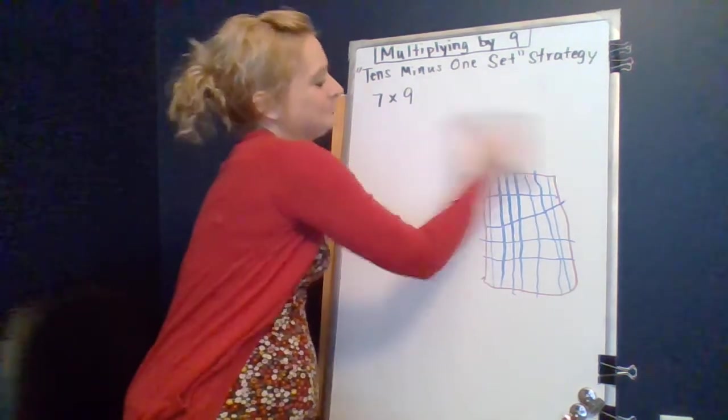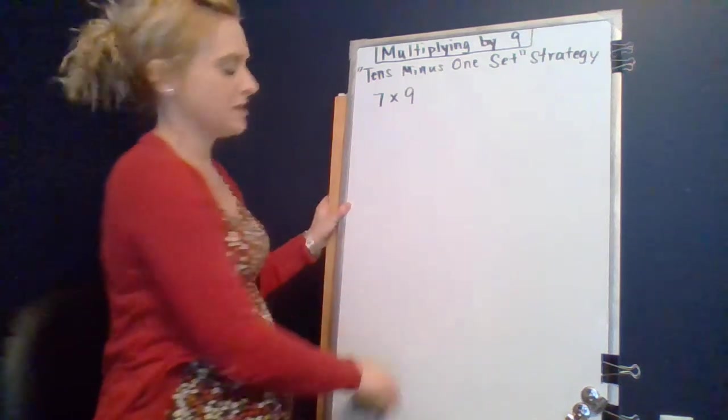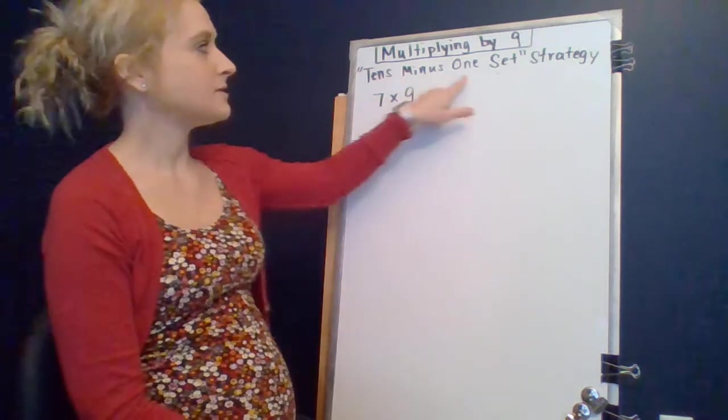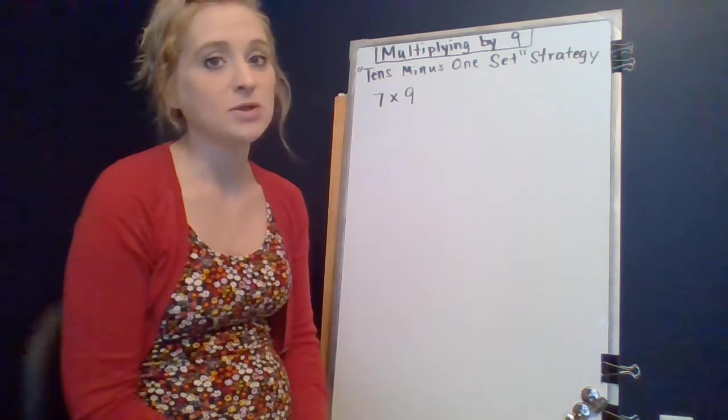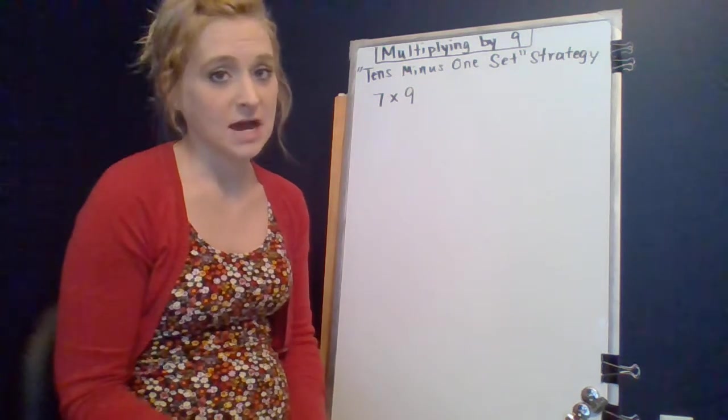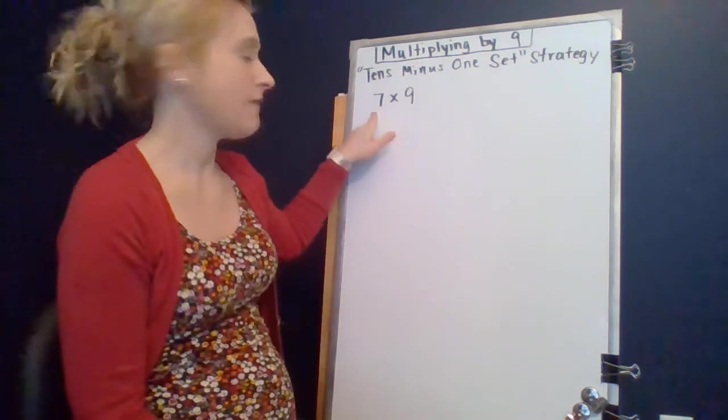So let's get started with this strategy, multiplying by nine, called the tens minus one set strategy. And it is the way it sounds. We're going to multiply the other factor that isn't nine by ten, and then we're going to take away a set of that other factor.